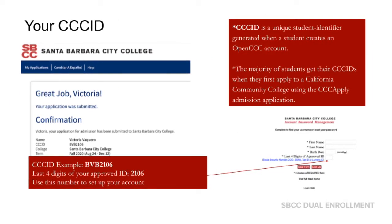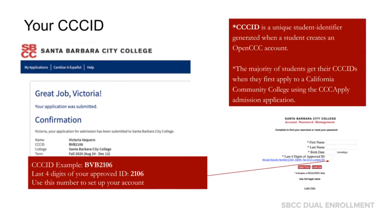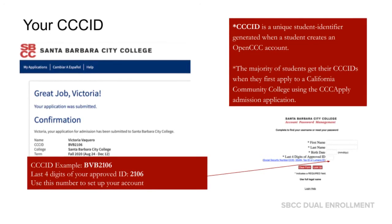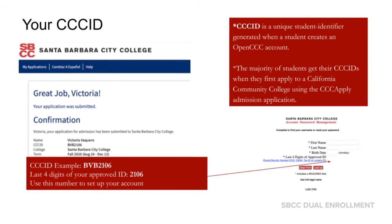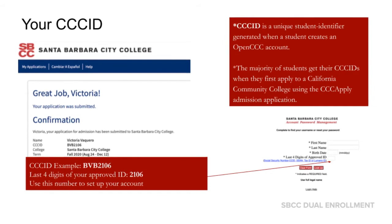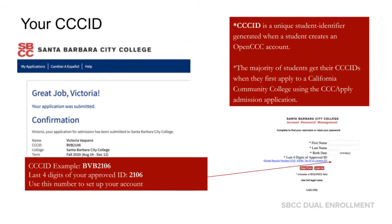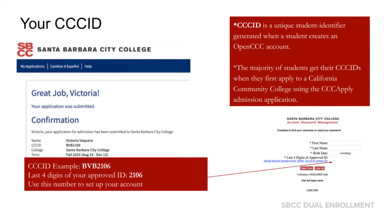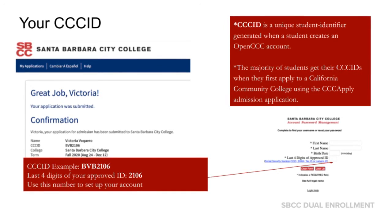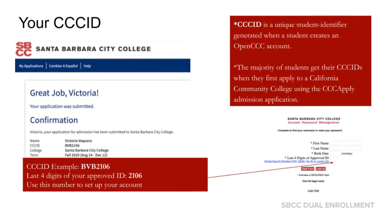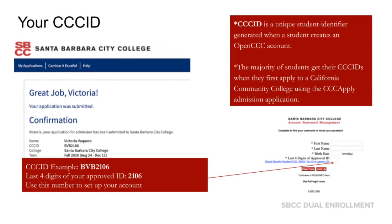Your CC ID is a unique student identifier generated when a student creates an Open CCC account. Please note the example on the left: BVB 2106. The last four digits of this student's CC ID are 2106. This is the number you would use to set up your account.